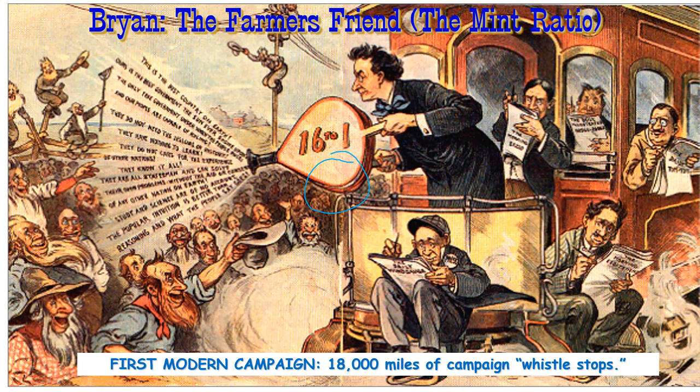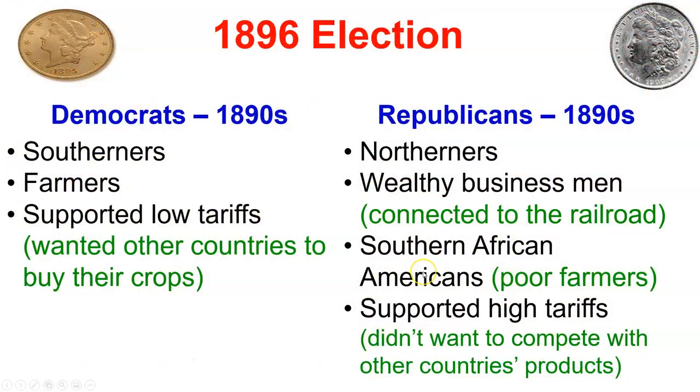To get his messaging across, Bryan had a moving, powerful voice — he could speak to thousands of people audible from a huge distance — and immense energy, making him a great orator and speaker from Nebraska in the West. He went on what is considered to be the first modern campaign: he got on a train, traveled 18,000 miles, and spoke town after town about the populist and Democratic party platform.